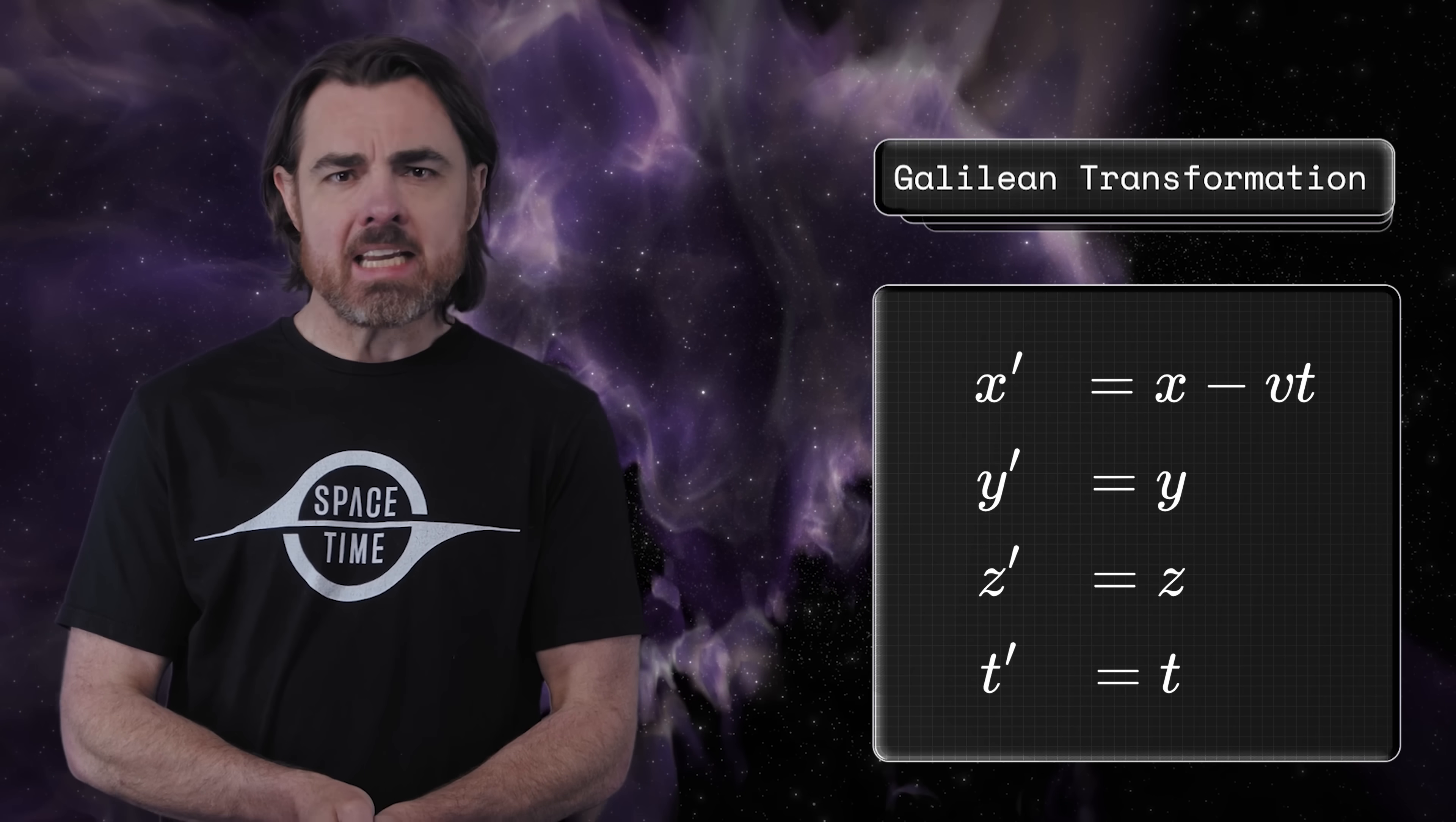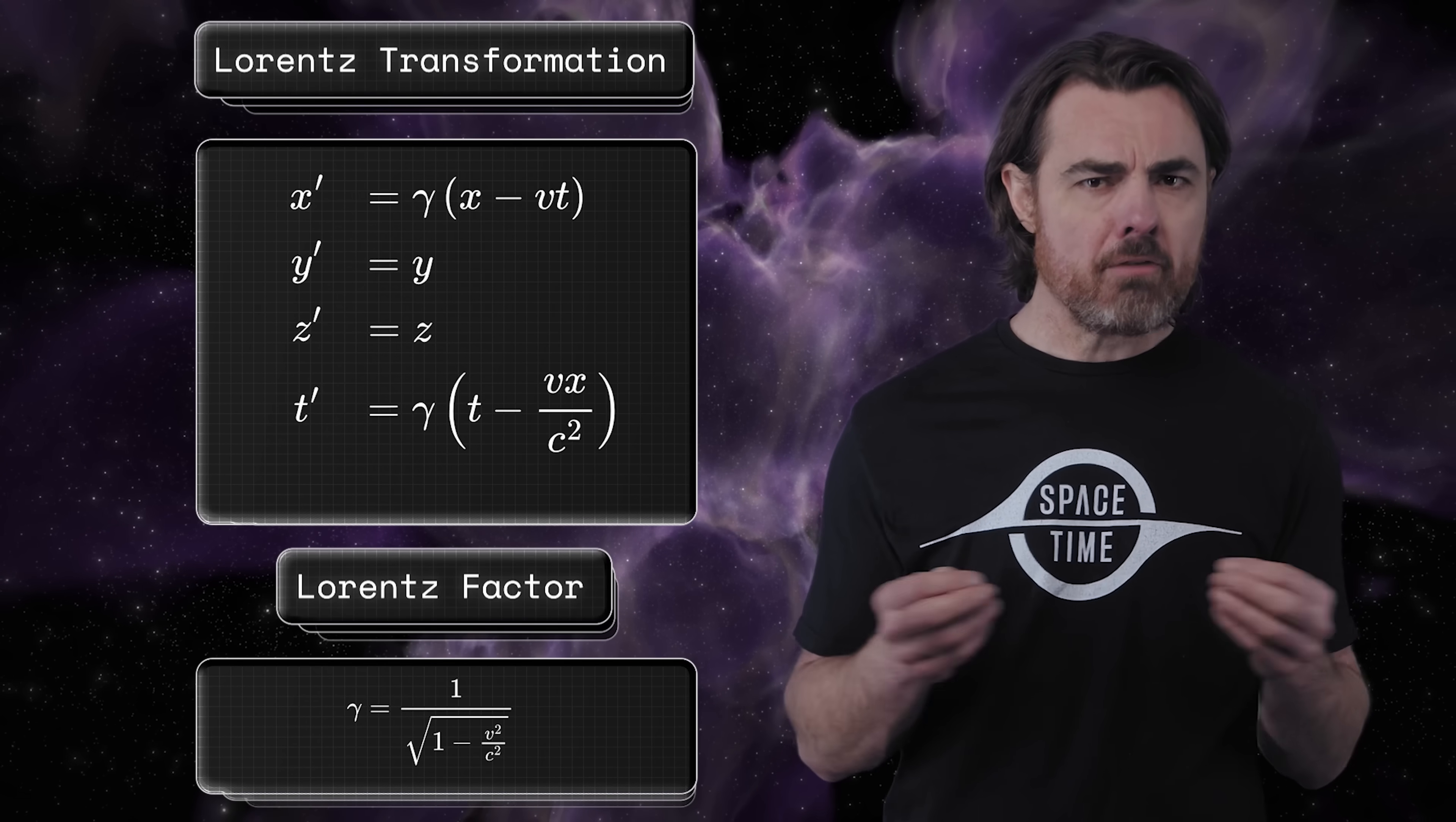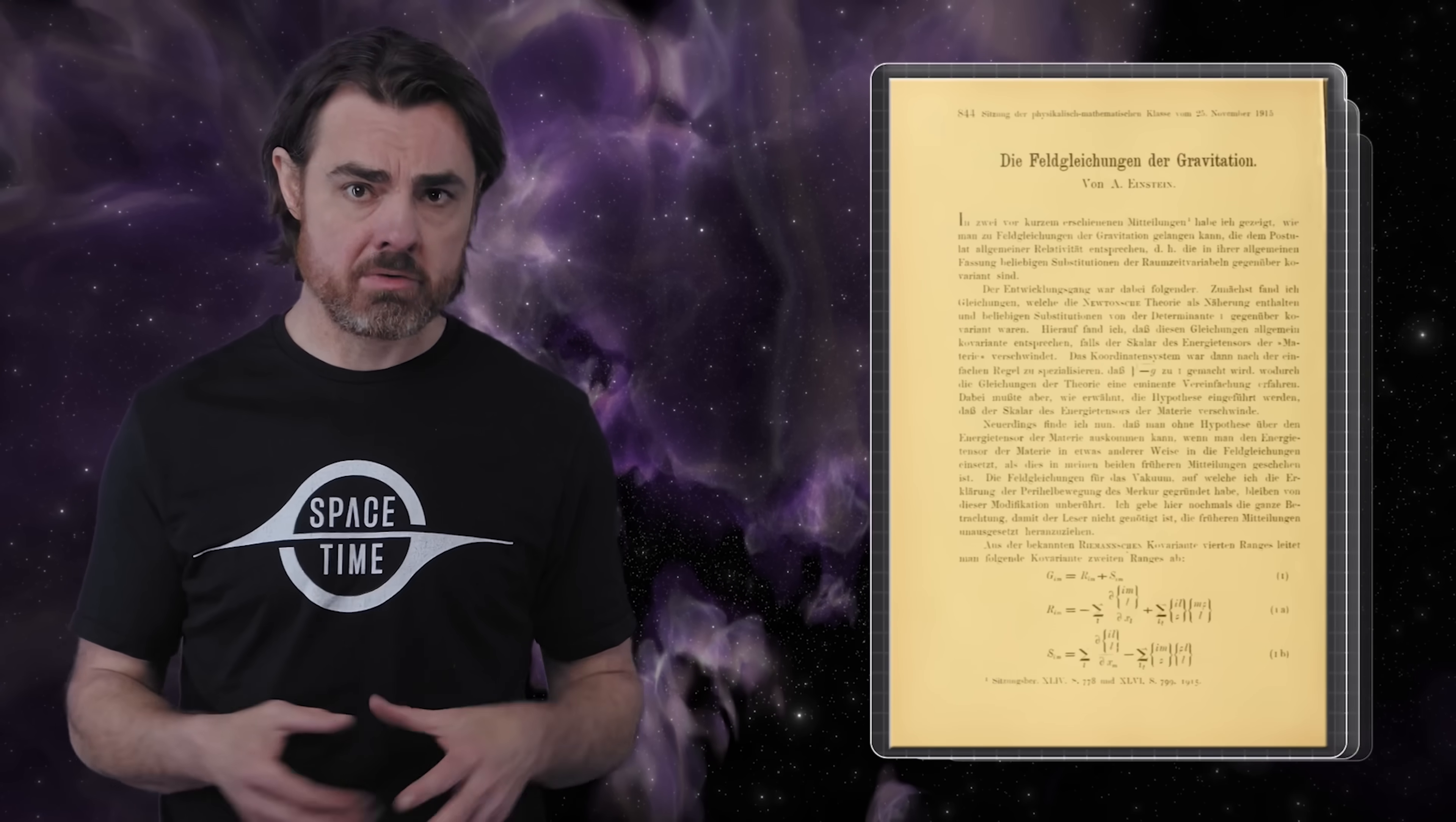Einstein realized that he could fix this inconsistency by just being much more serious about the proposition that the laws of physics don't care about velocity. He realized that even our measurement of the speed of light constitutes a law of physics. But requiring that all observers measure the same speed of light led him to his theory of special relativity. In Galilean relativity, you can change to a different reference frame by adding the velocity of that reference frame to all other velocities. This is called the Galilean transformation. But that can easily lead to some things having speeds greater than light.